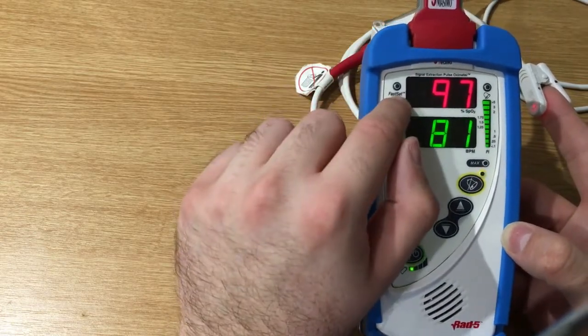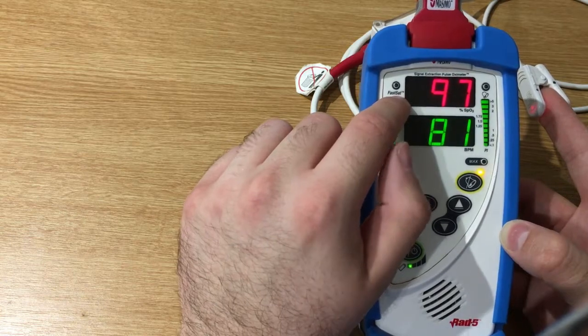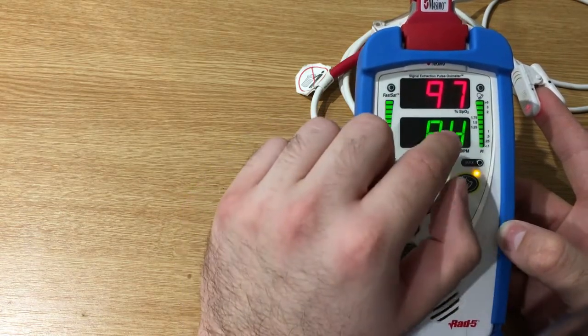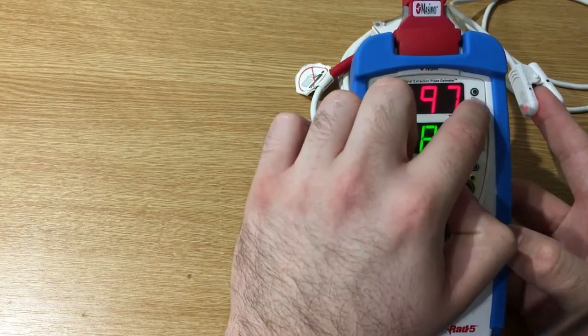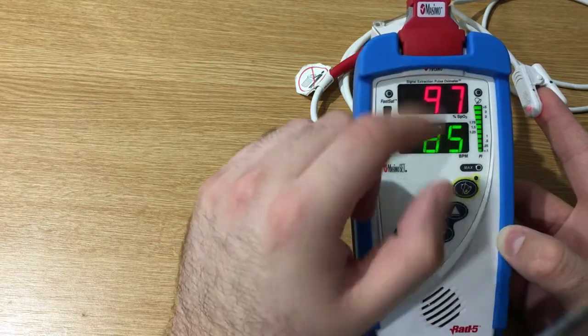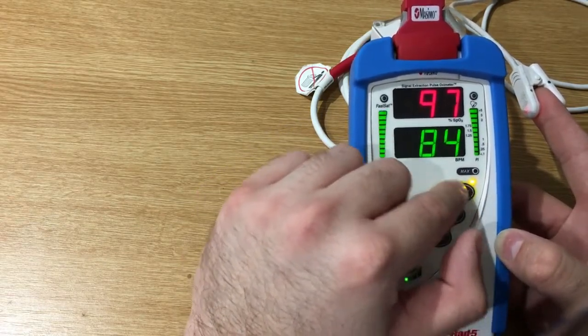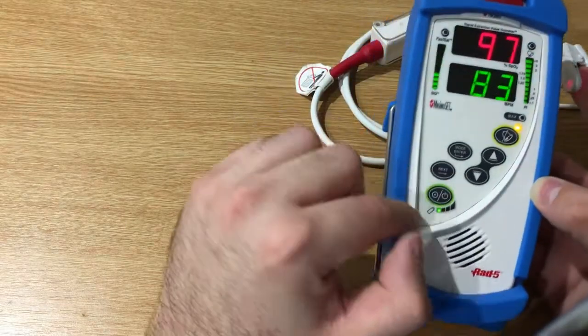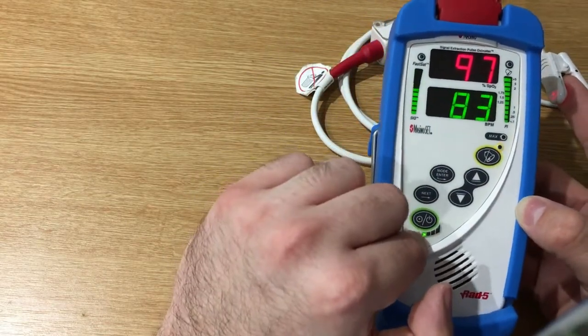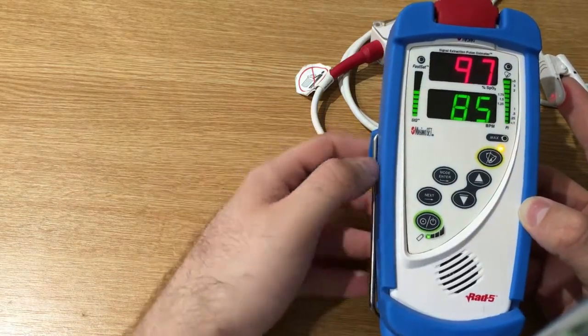As you can see here, there is the fast sat indicator. The fast sat is a feature that rapidly tracks changes in arterial oxygen saturation. Here there is the alarm LED. Here there is the silence LED, so if we press this button we'll silence the alarm, and here it's blinking because we have a low battery. And this one, as you can see, is the battery indicator.